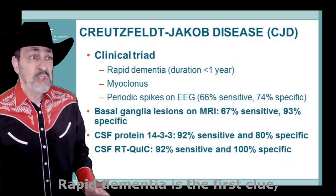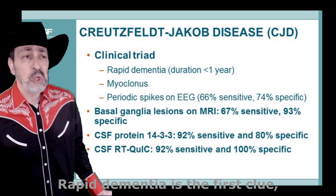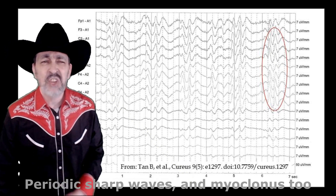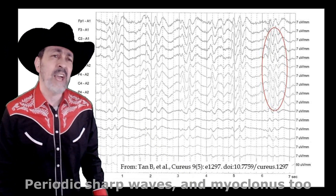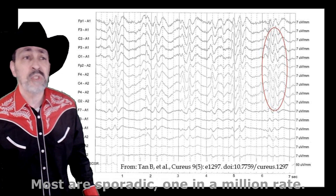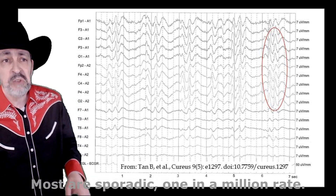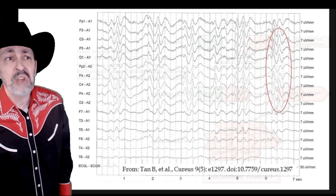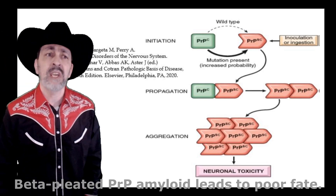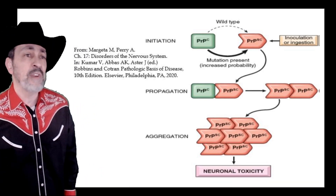Rapid dementia is the first clue. Periodic sharp waves and myoclonus too. Most are sporadic, one in a million rate. Beta-pleated PrP amyloid leads to poor fate.